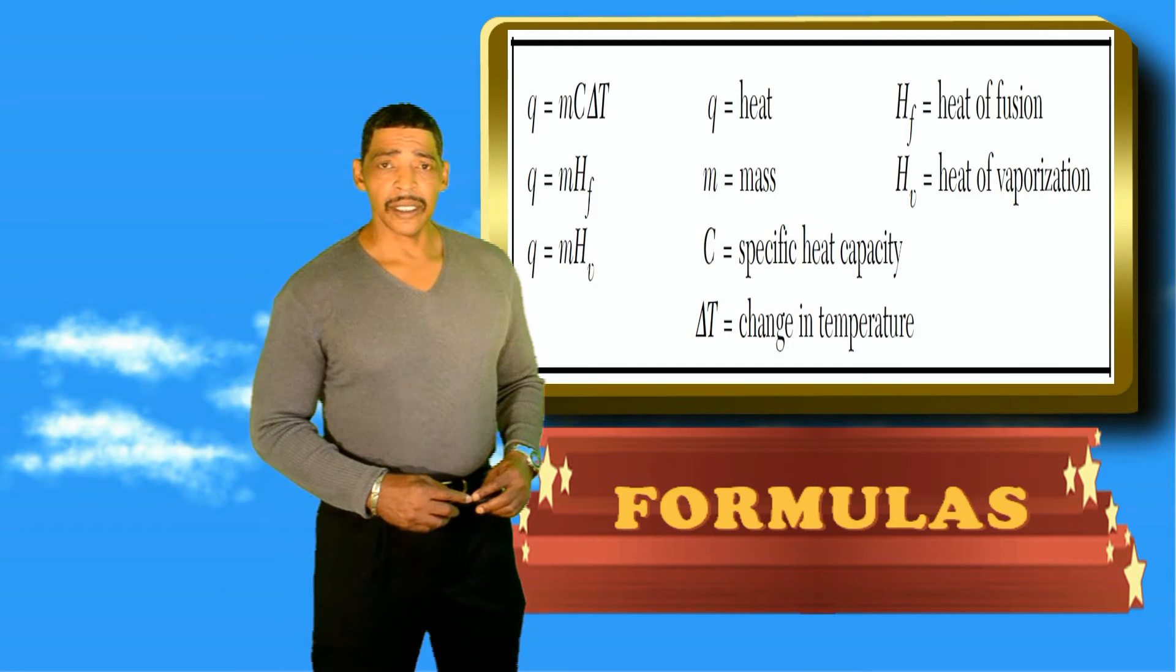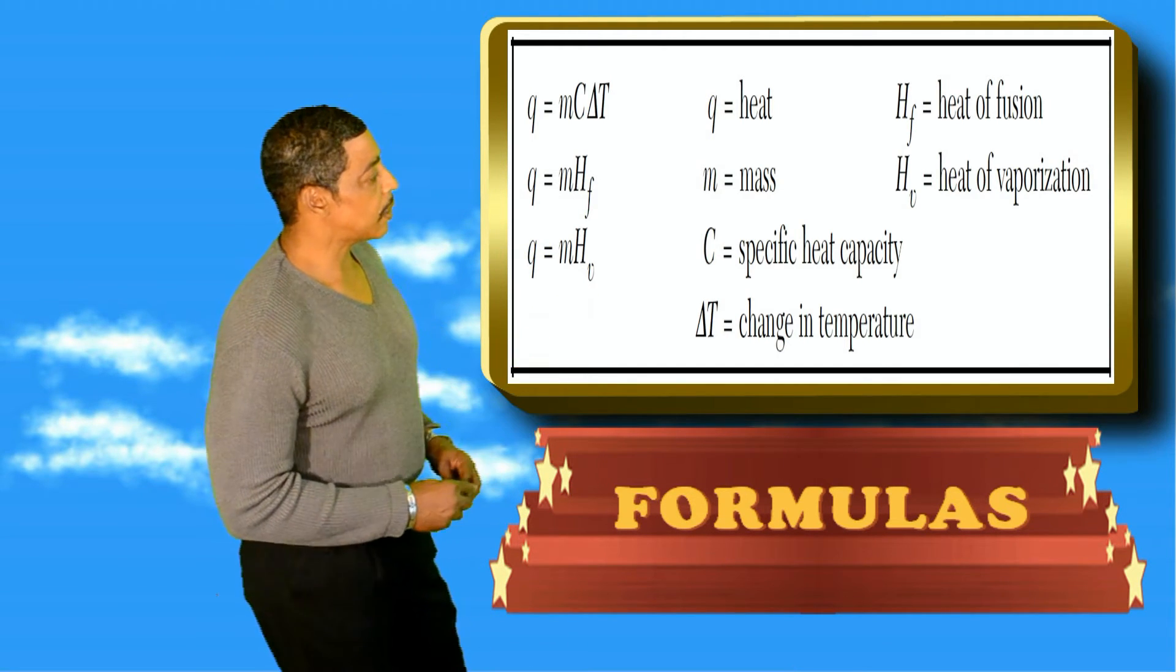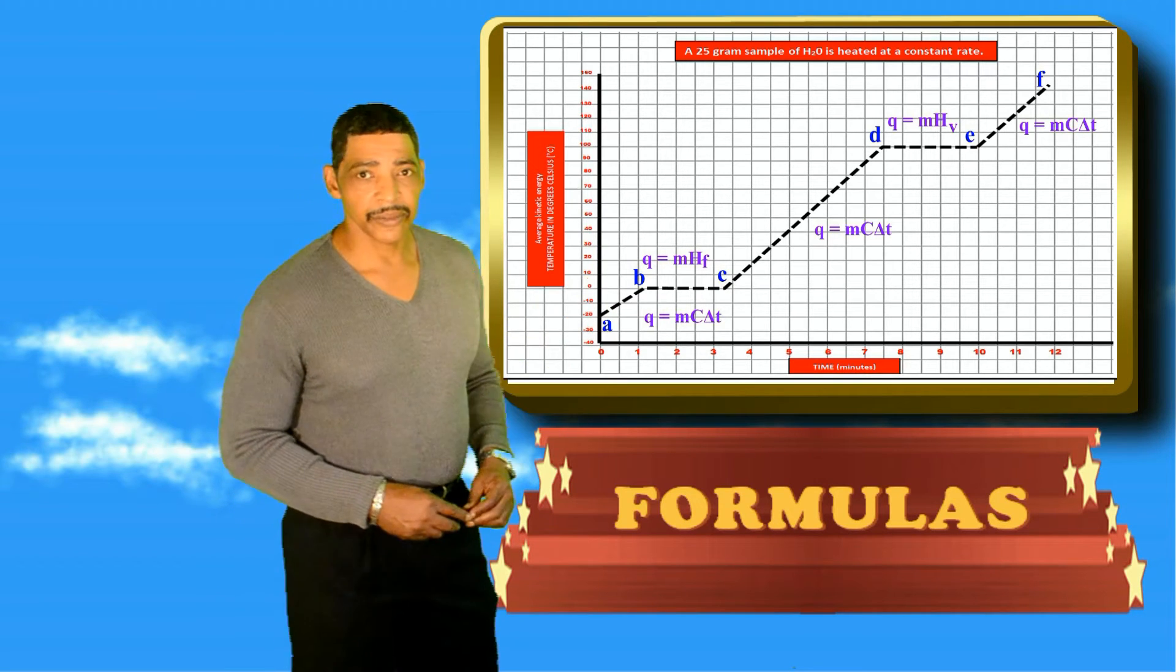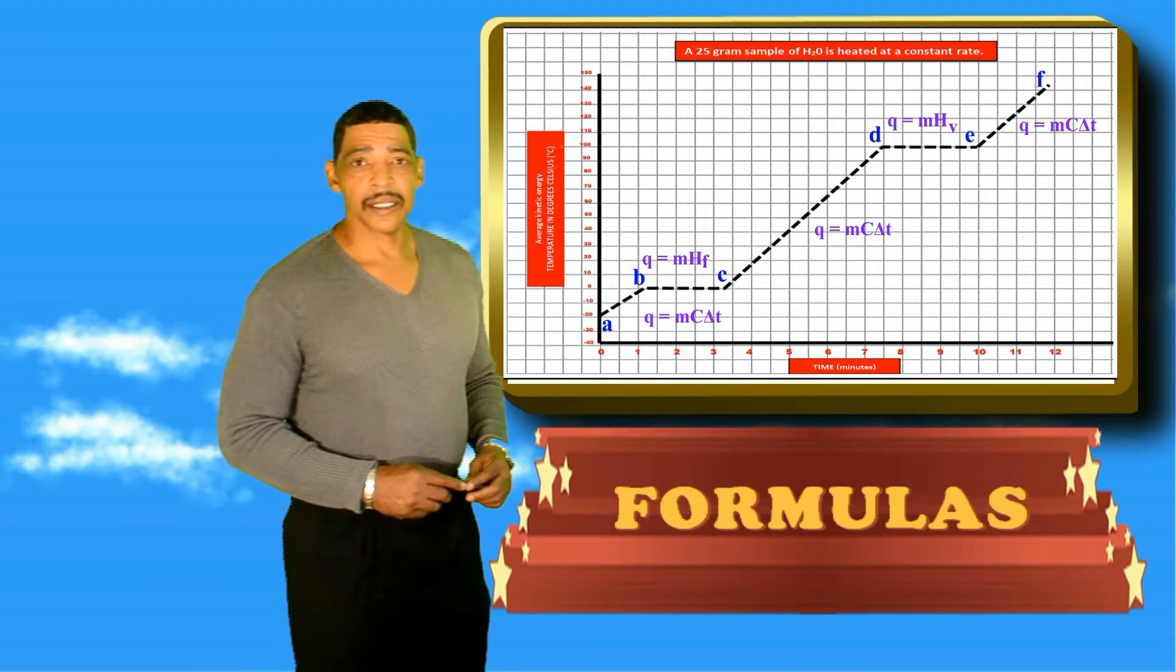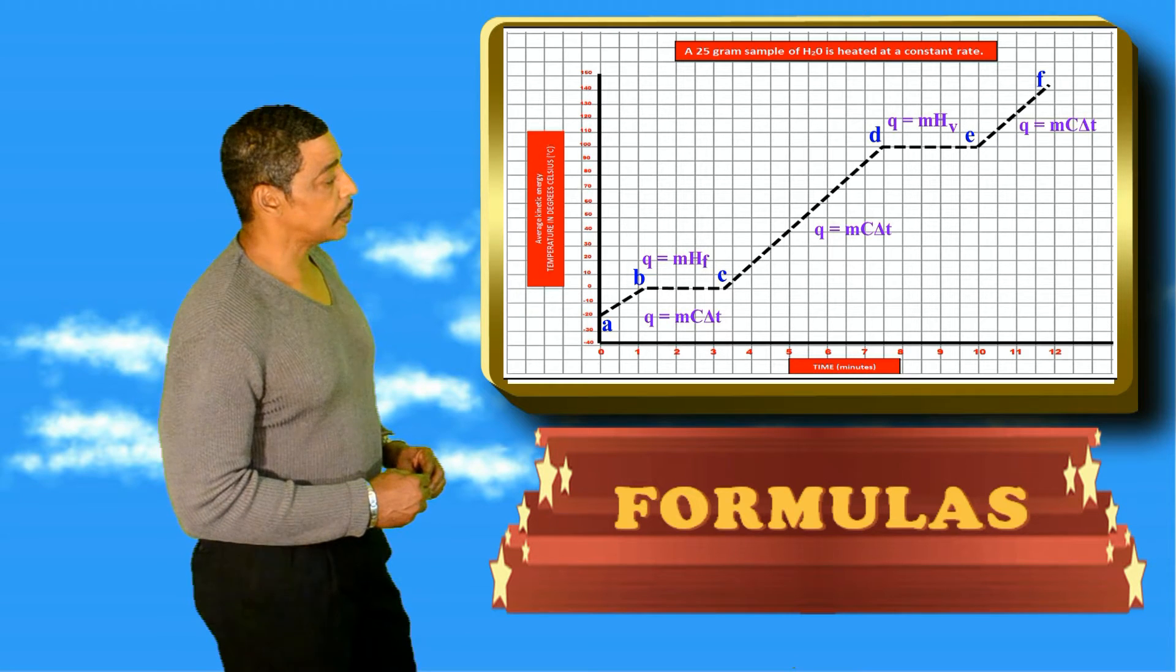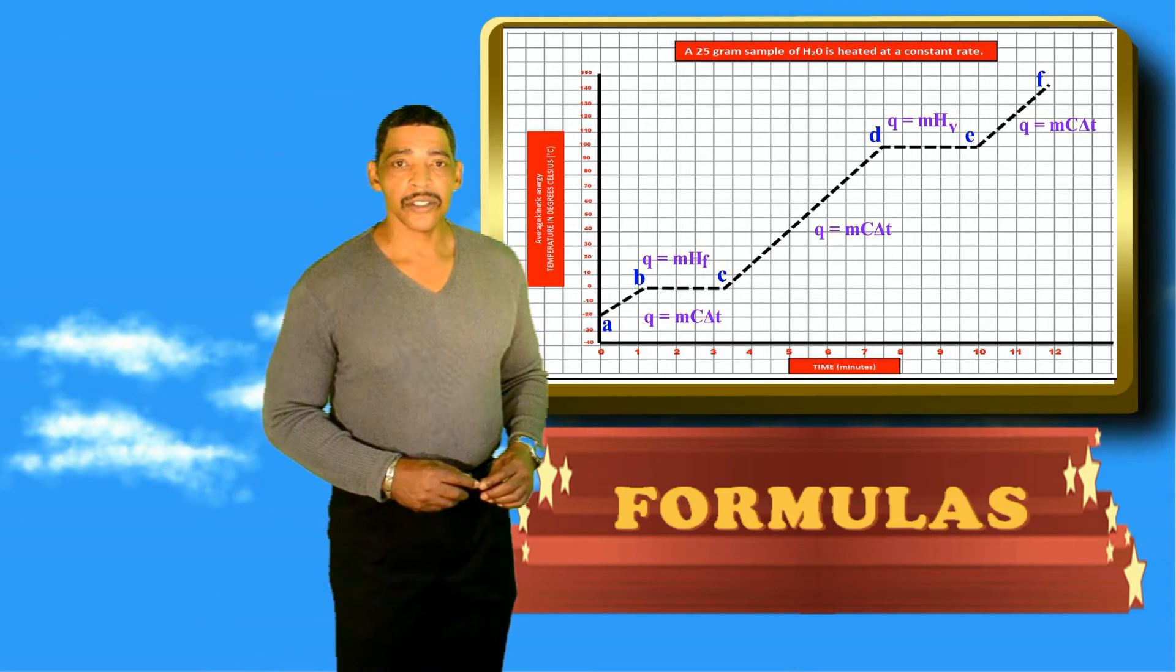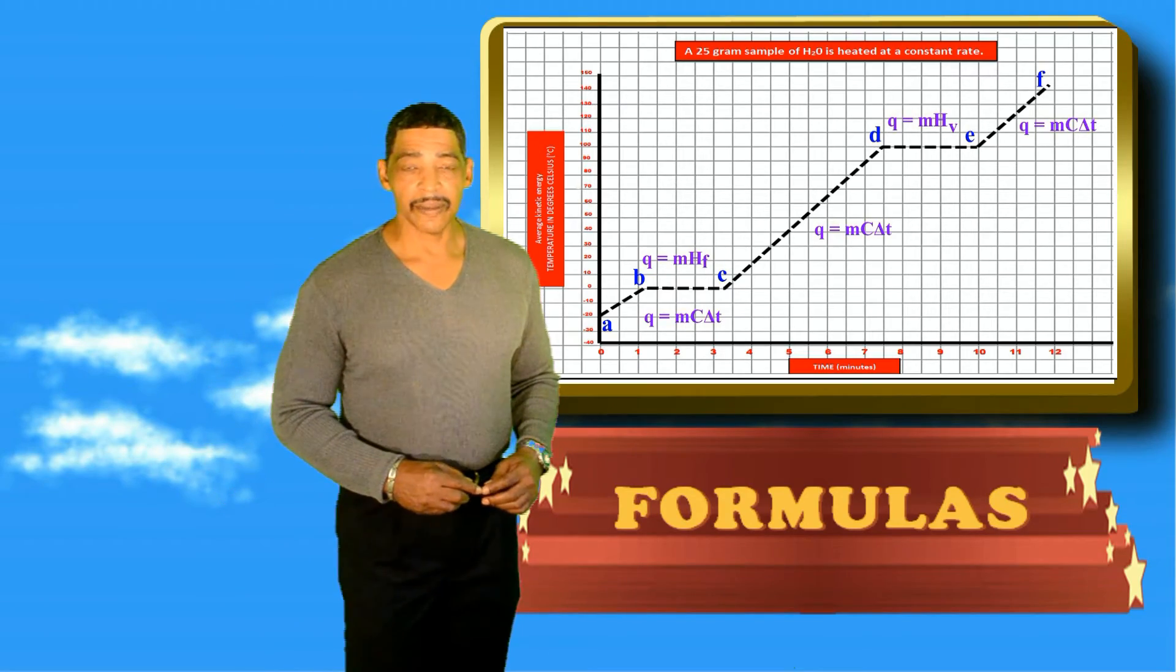In addition to the physical constants, the proper formulas are also required. For example, each diagonal line will use the same formula, where Q is equal to MC delta T. At the first plateau, which is located at the melting point or point of fusion, the formula is Q is equal to MH sub F. And at the plateau representing vaporization, the formula will be Q is equal to MH sub V.